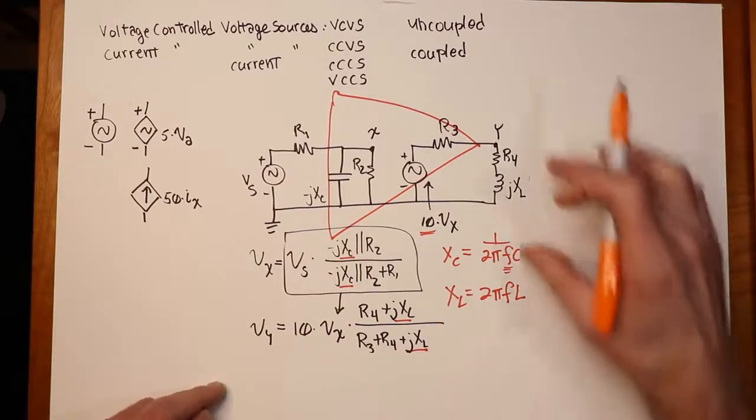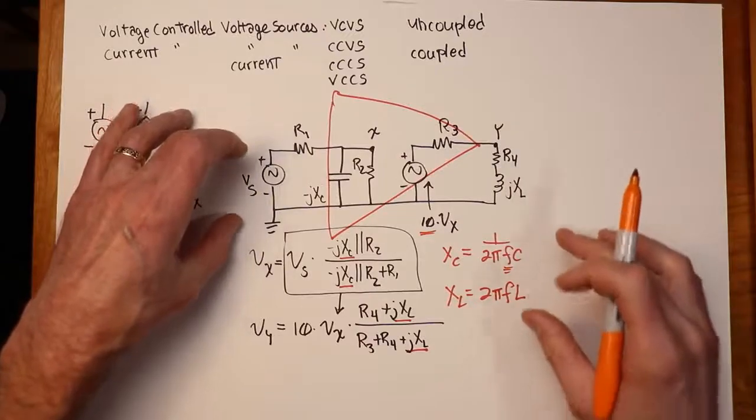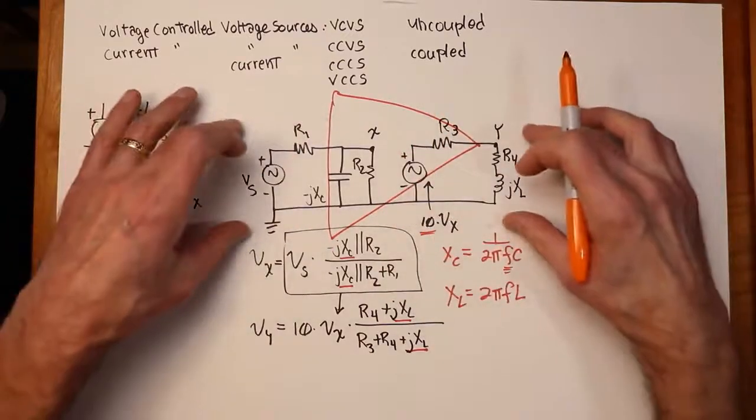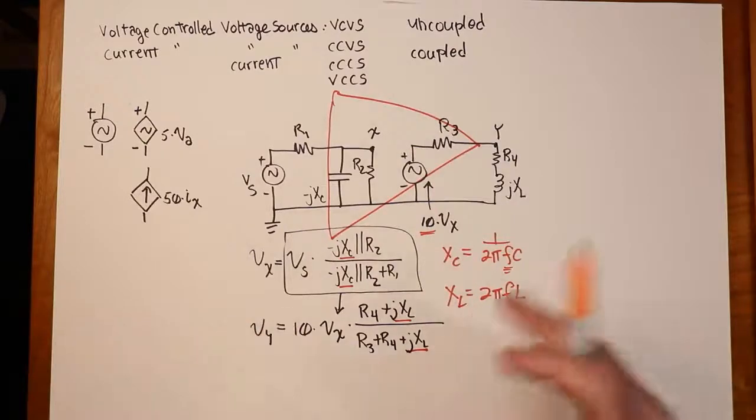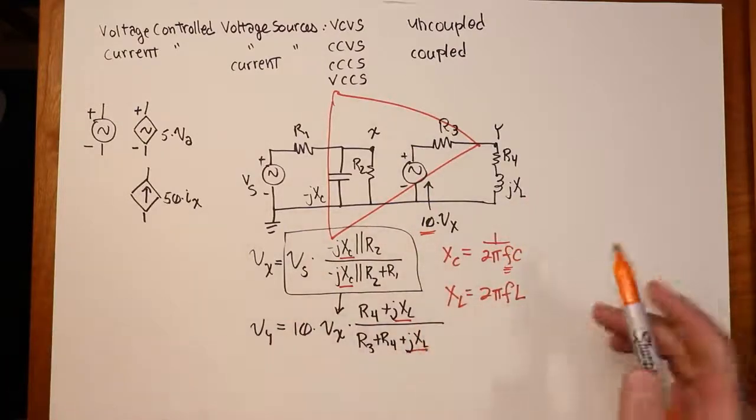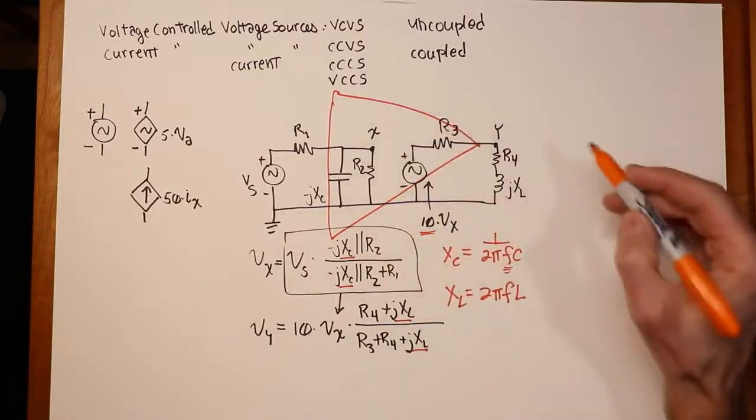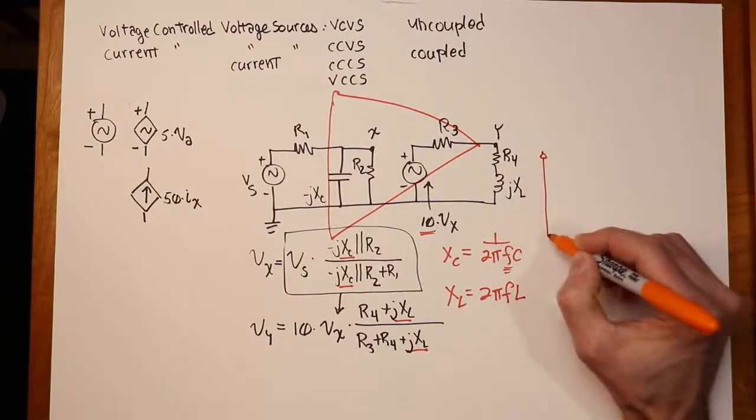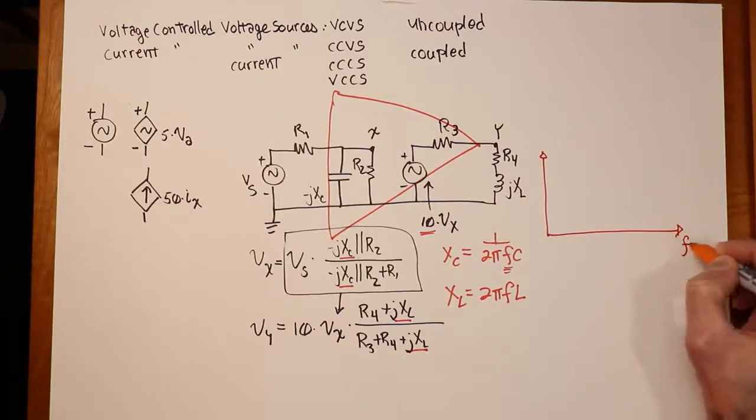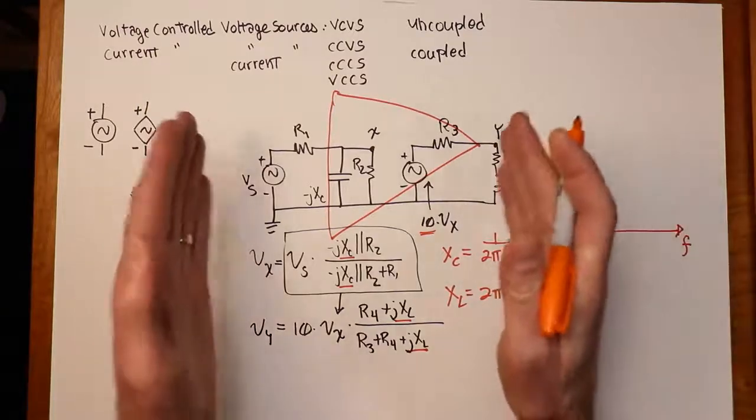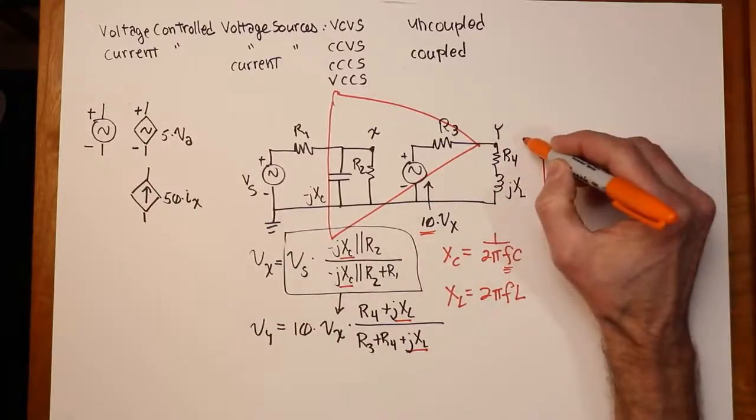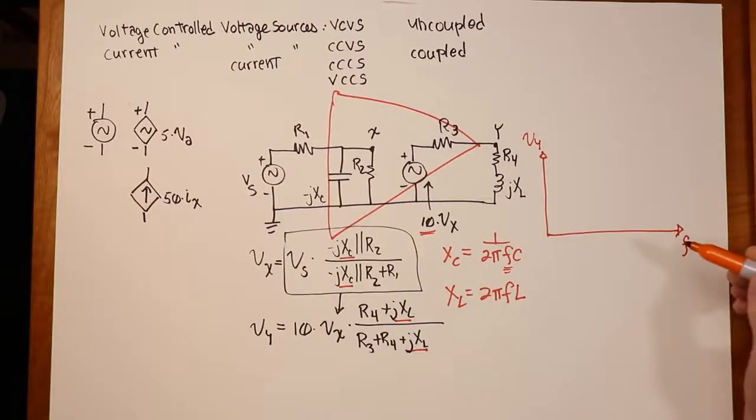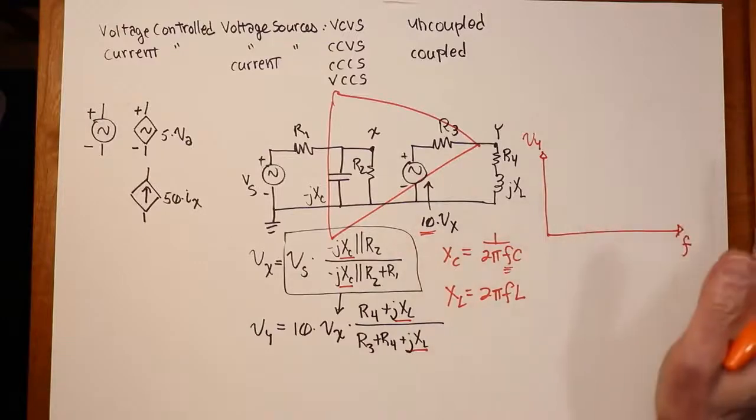Or you could simply take the ratio of VY to VS, in other words do it as a normalized value. Then you would increase the frequency, do it again, increase the frequency, do it again, and you could wind up determining how much signal you have at the output, something that would look like this. We have frequency over here, and this would either be a voltage or like I said some kind of ratio if we wanted to do it as an absolute voltage. This would be VY out here, and you could see what's happening. So as the capacitor values decrease, the reactance values decrease as frequency goes up and XL gets bigger, you might get some kind of interesting curve out of this thing.